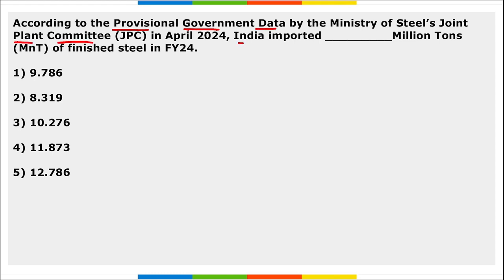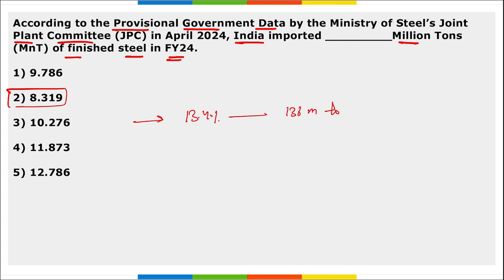According to the Ministry of Steel's Joint Plant Committee data, in April, India imported 8.319 million tons of finished steel in FY24. The steel consumption in India jumped by 13.4 percent to 136 million tons in FY24, and the finished steel consumption in India also increased by 13.4 percent to 135.95 million tons. India aims to increase annual steel production capacity to 300 million tons.